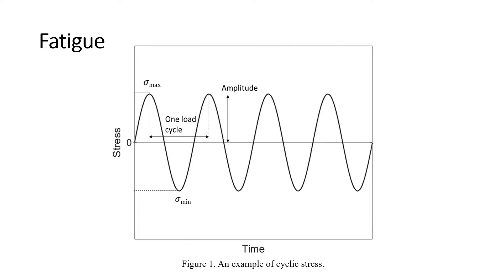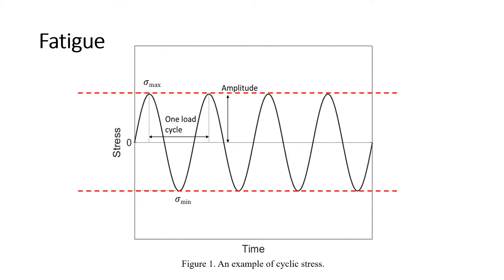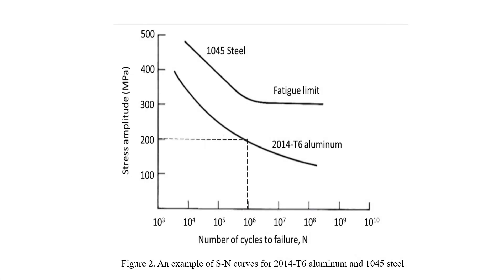Those cracks usually occur at free surfaces and at stress concentrations. The number of cycles a material can endure is highly dependent on the amplitude of the stress cycle. The amplitude of stress is represented as the highest stress value of the sine cycle. This SN chart shows the relationship between the stress amplitude and the number of cycles to failure.